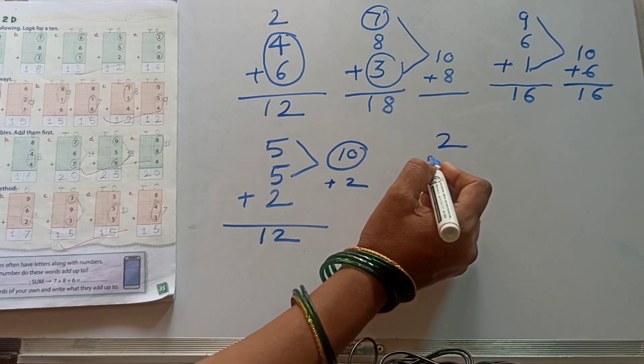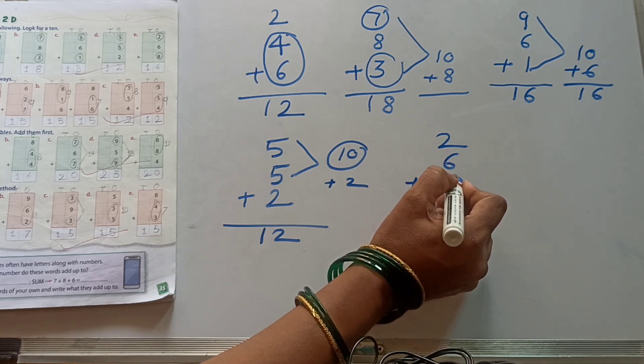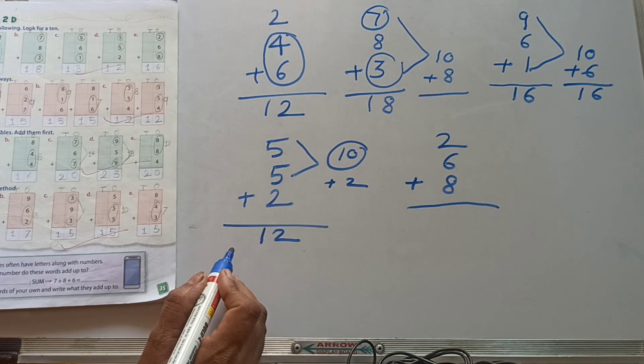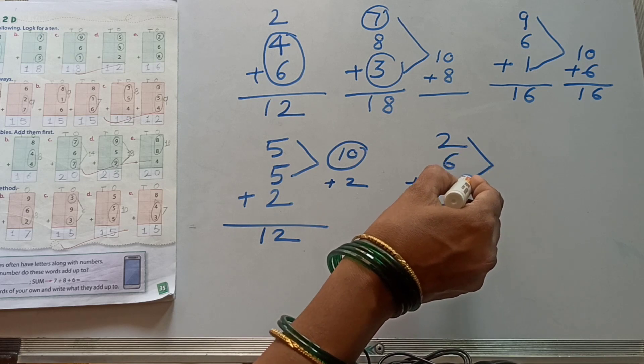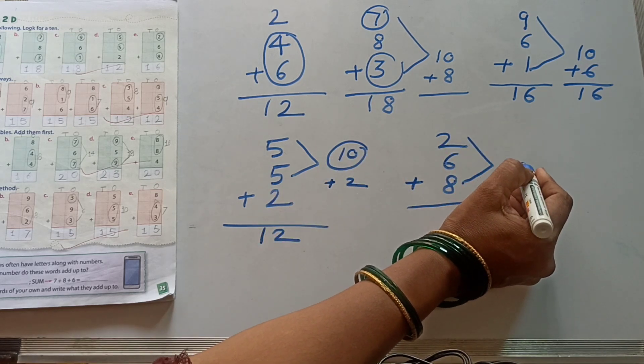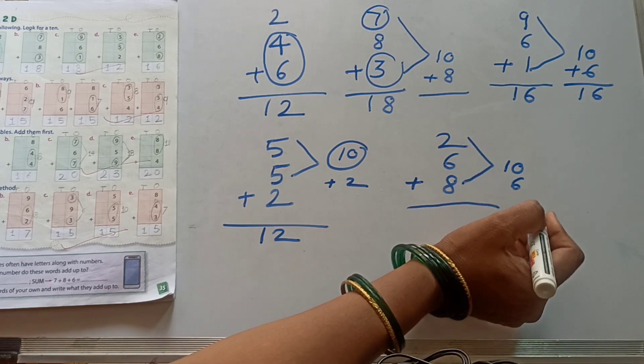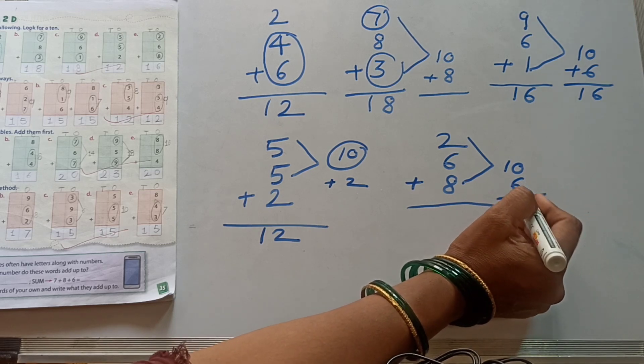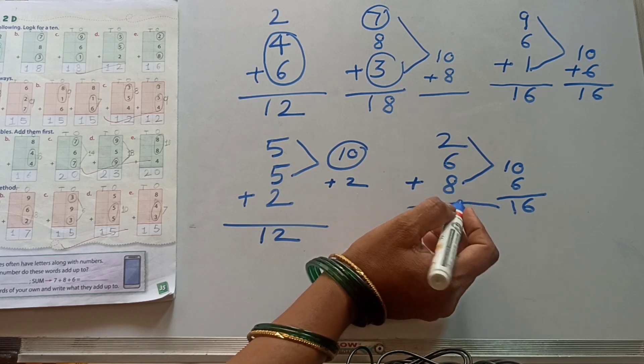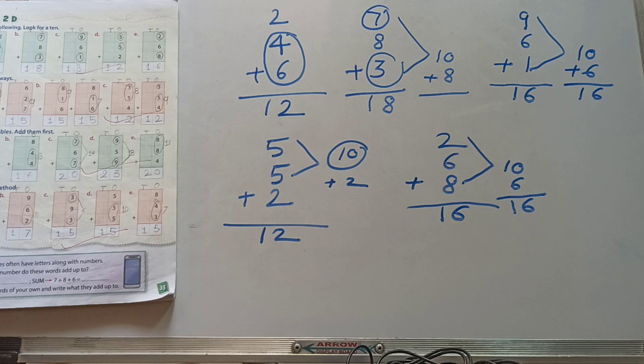Next, 2 plus 6 plus 8. Yes, this one, 2. Plus 8, 10. 10 plus this one, 6. This one, 6, and 1, write down chart. We've got our answer, 1, 6, 16.